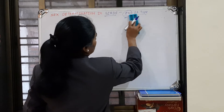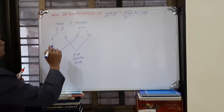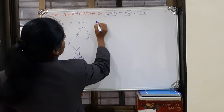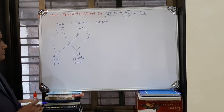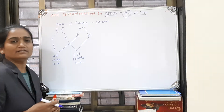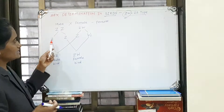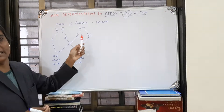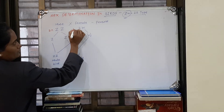Now, how do we determine the sex of birds? If we take a male and a female as parents, the male has the genotype ZZ and the female has the genotype ZW. Then, the male produces two gametes and the female also produces two gametes.